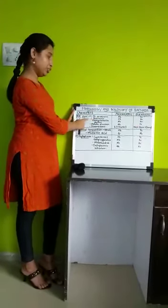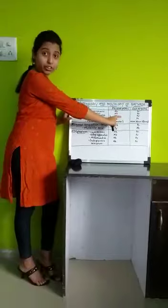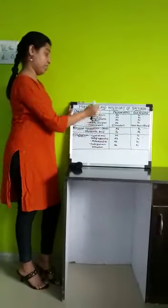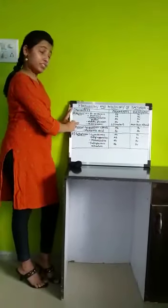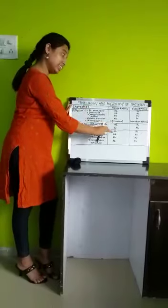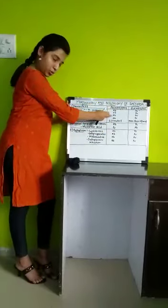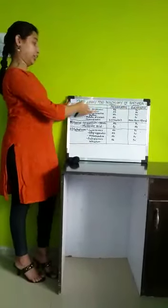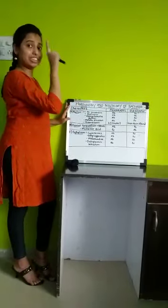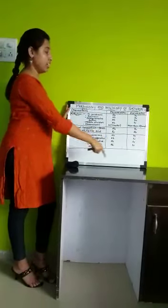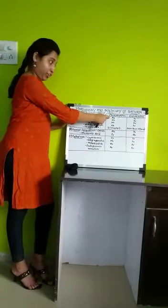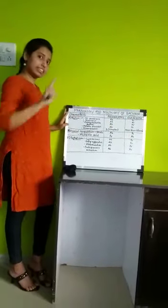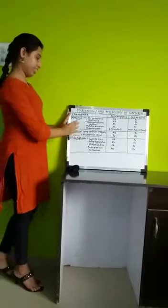Deoxyribonucleoprotein is absent in prokaryotes, while it is present in eukaryotes. Mitotic division is absent in prokaryotes and is present in eukaryotes. The chromosome is only one and is circular in prokaryotes, while in eukaryotes it is more than one and it is linear.